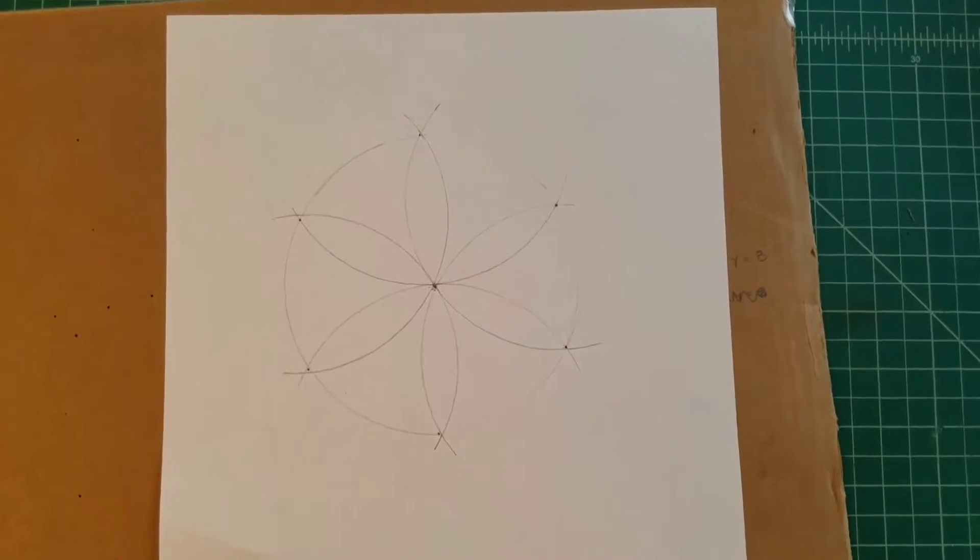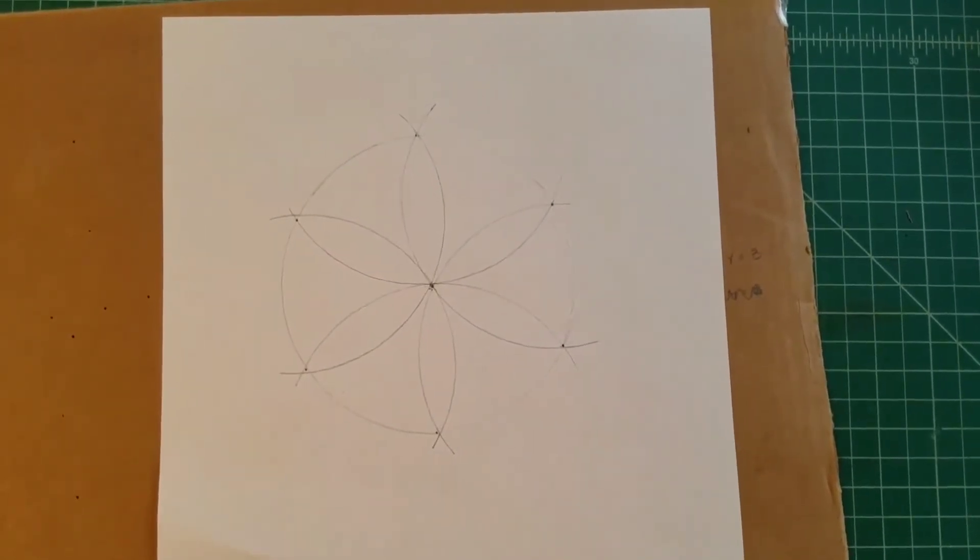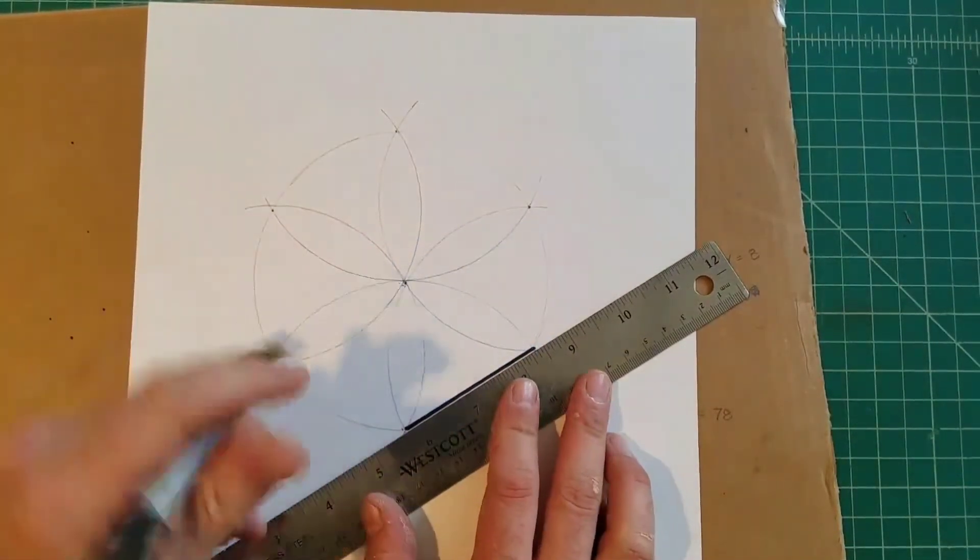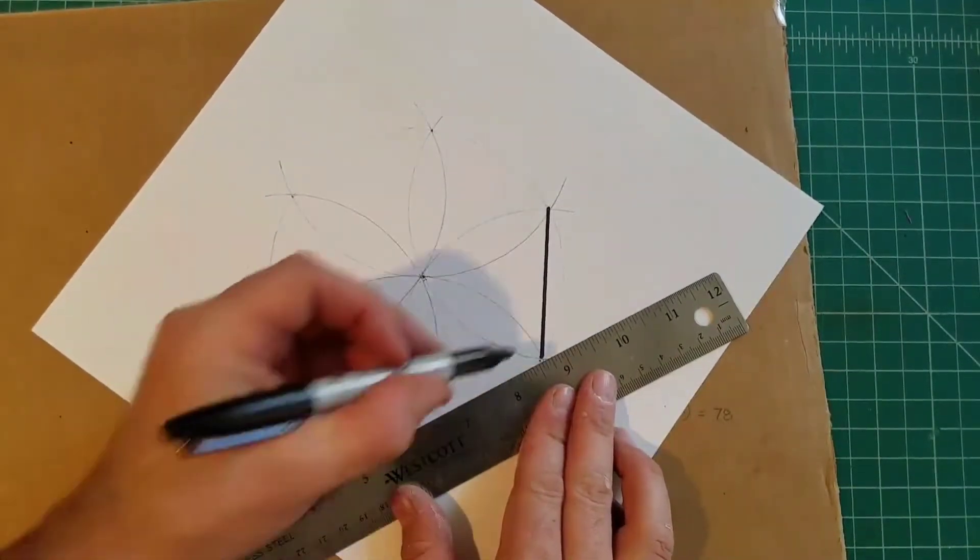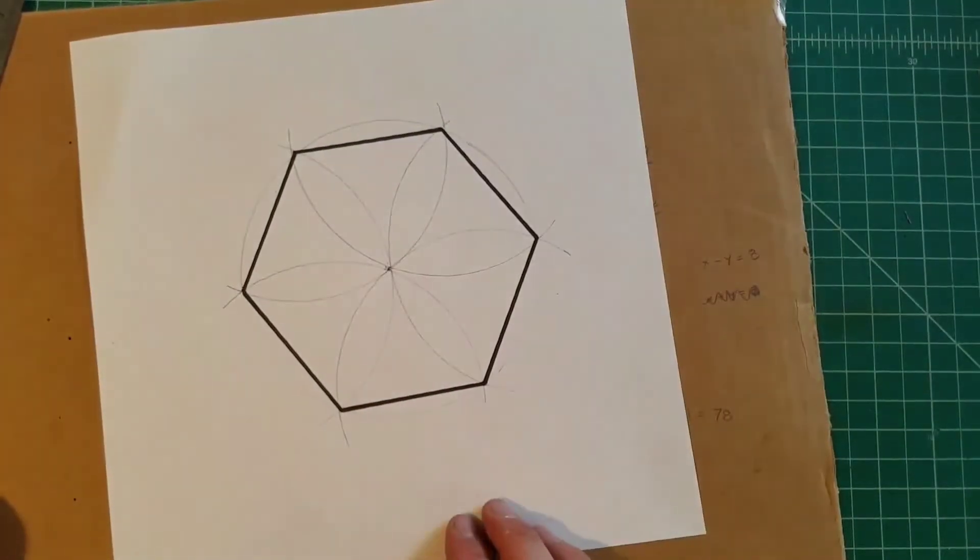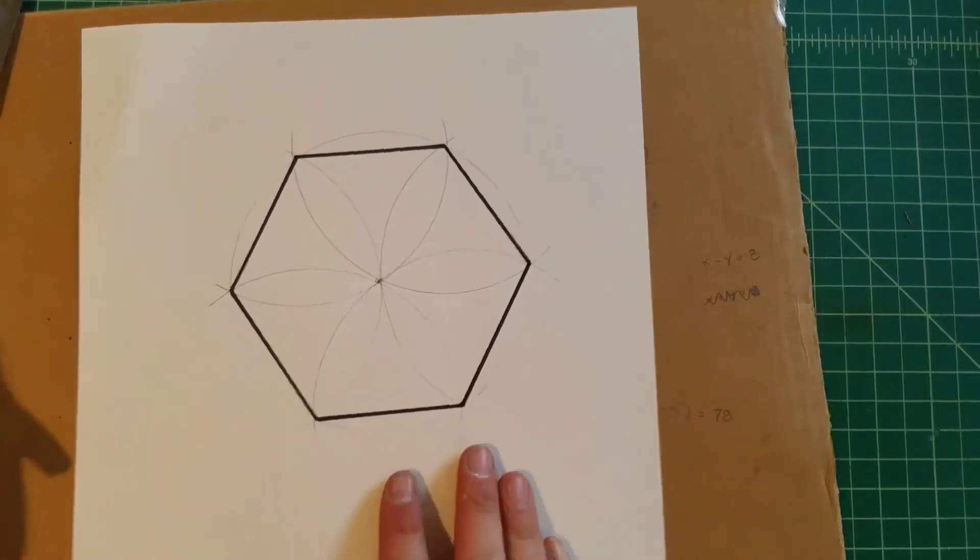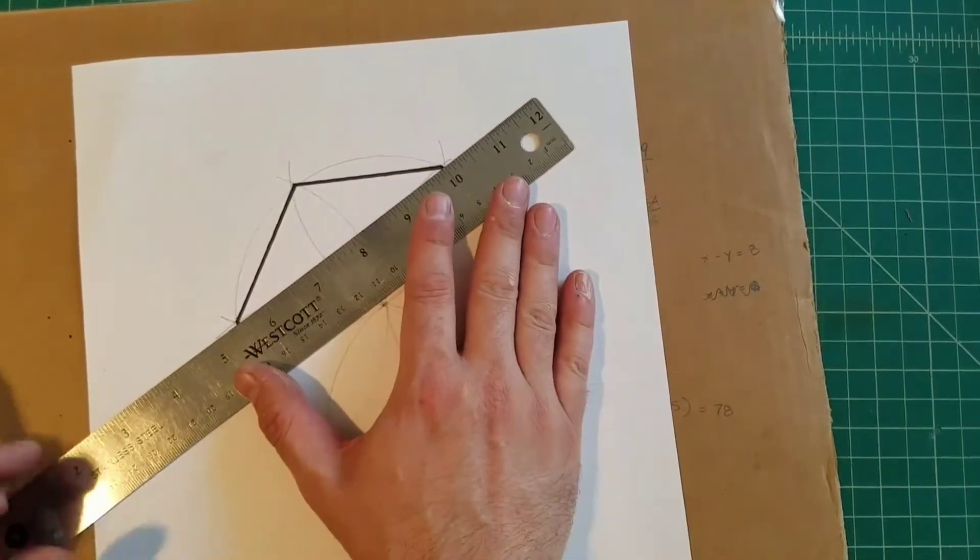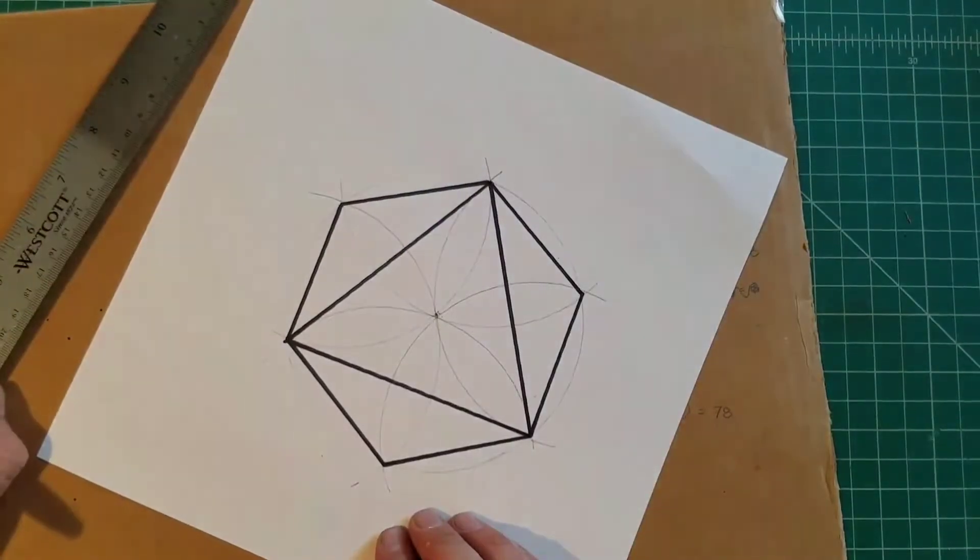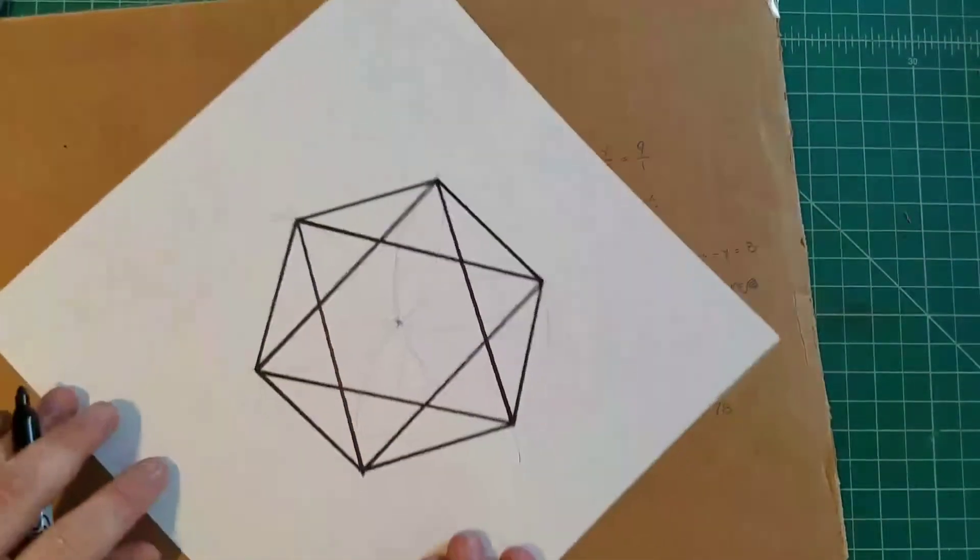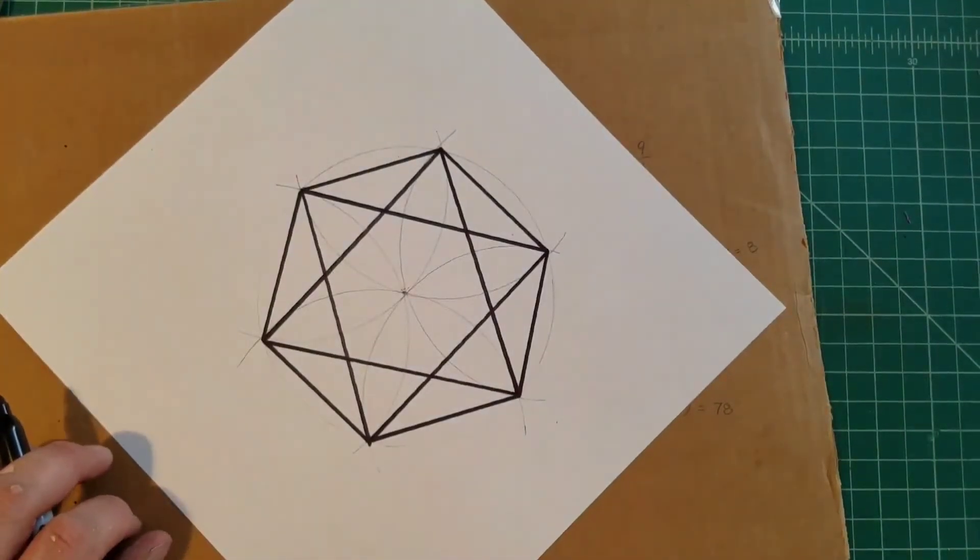Looking at this lovely hexagonal floret, you may notice that if I connect all the edges, I'll end up with a hexagon. That's a nice mathematically precise hexagon. And what happens if I connect every other point? Why, I have an equilateral triangle. And if I connect the three remaining sides, I now have a Star of David made from two equilateral triangles.